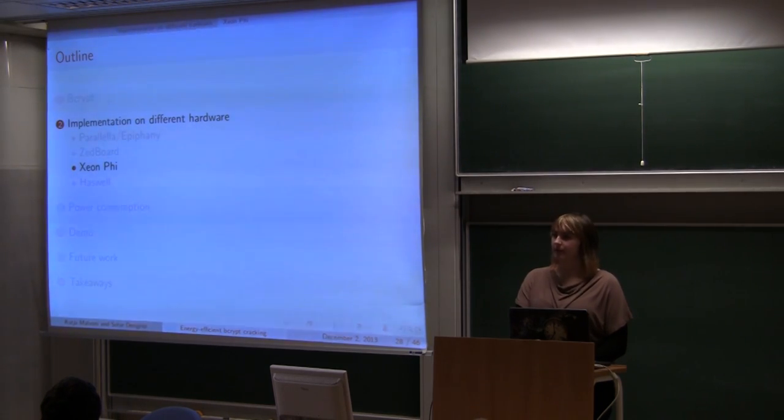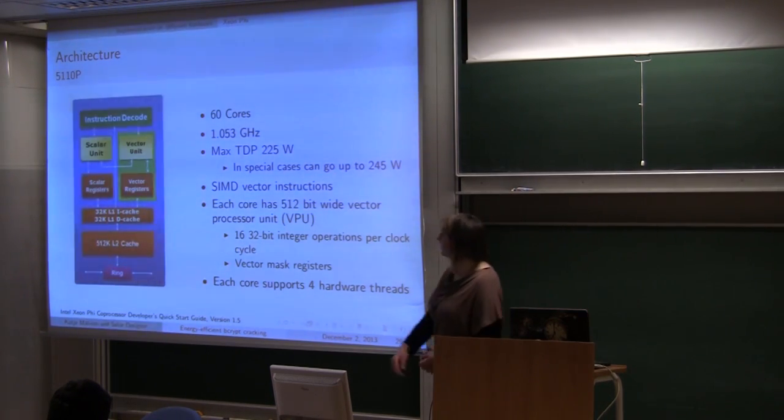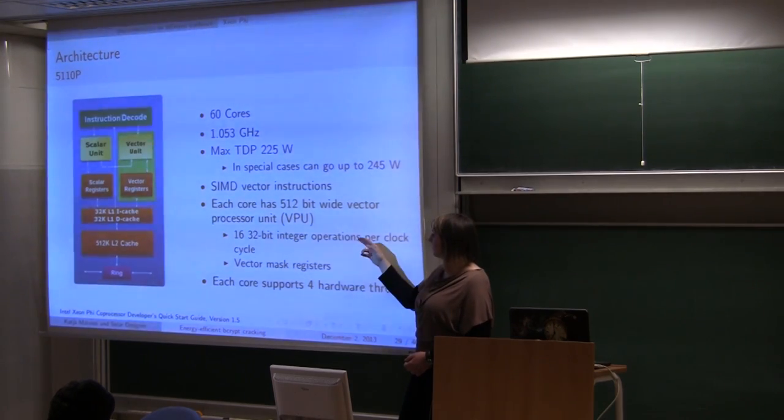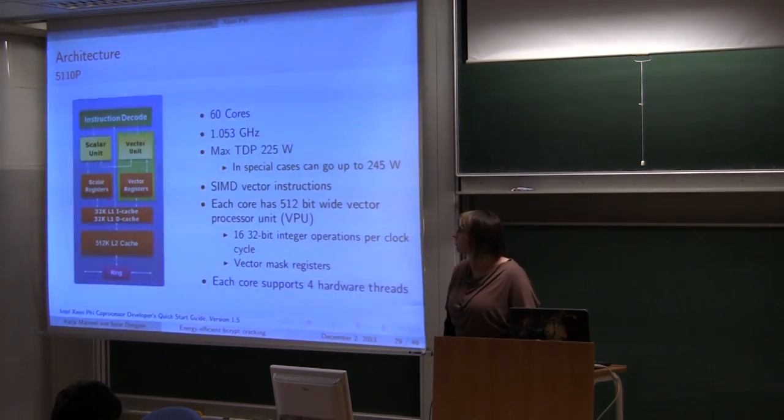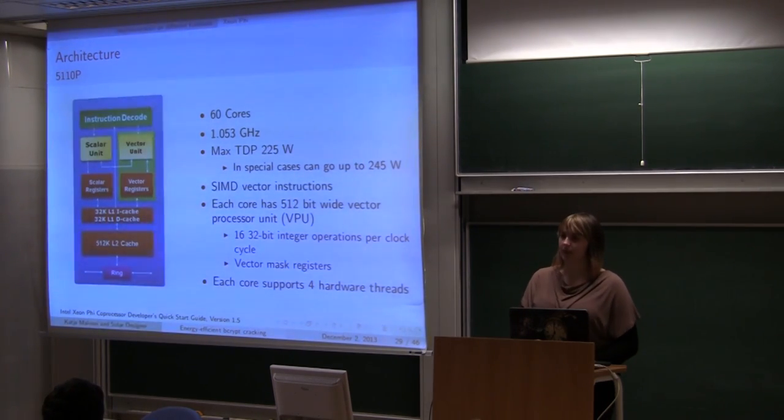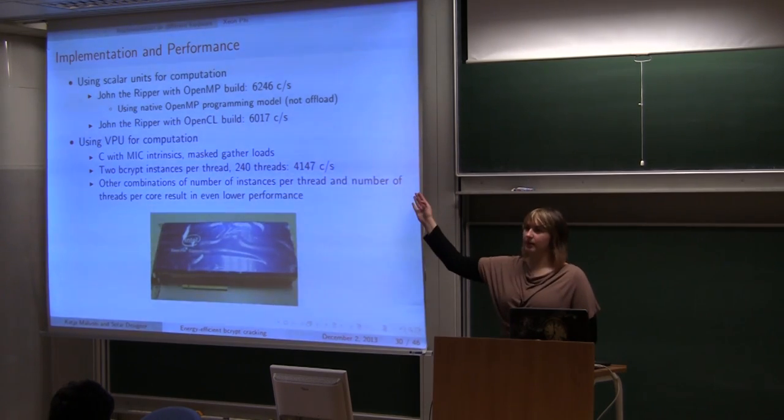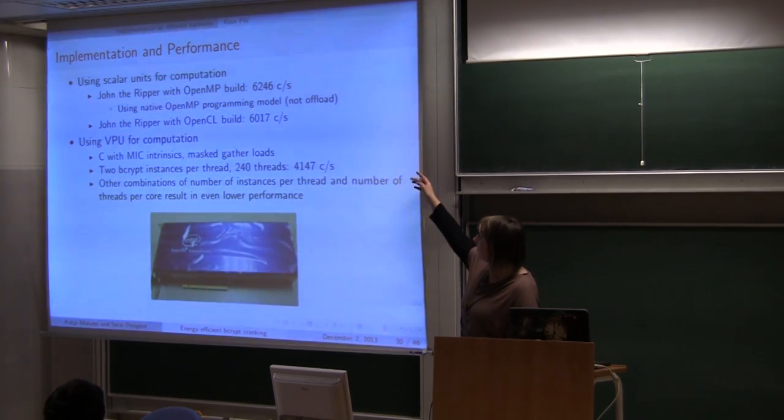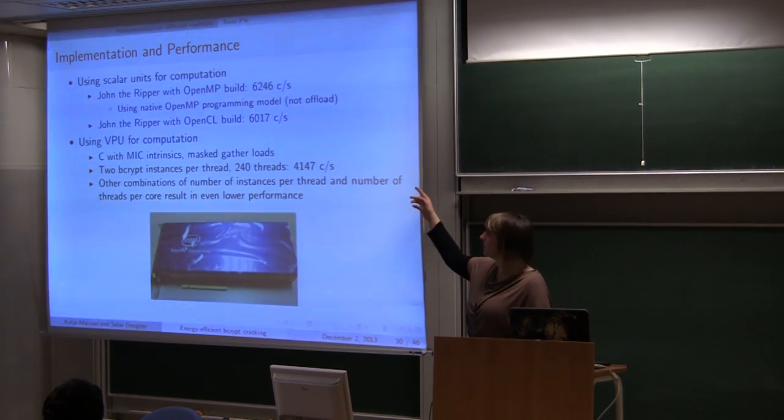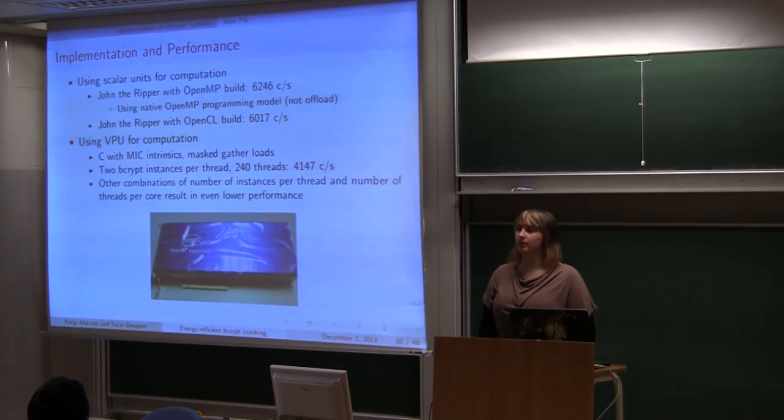So the next architecture that's interesting is Xeon Phi. It's interesting because it's a vector processor unit. Where we can execute 16 32-bit integer operations per clock cycle. And we have 60 cores which each of the cores supports 4 threads. So what we tried first was to use only scalar units. And to build John the Ripper with OpenMP and OpenCL. Which resulted in these performances.